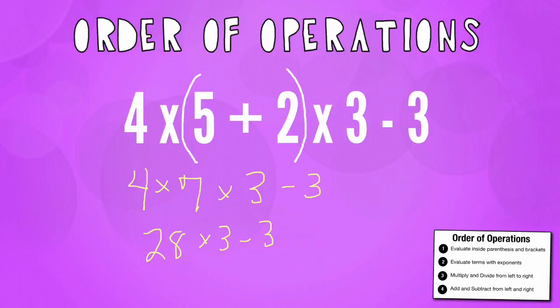Well, 28 times 3 is 84 minus 3 is 81. So my final answer there is 81.